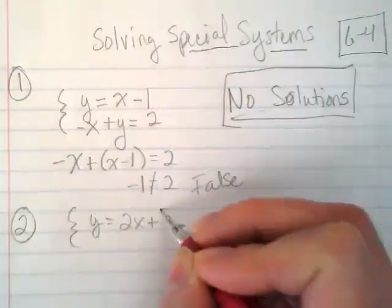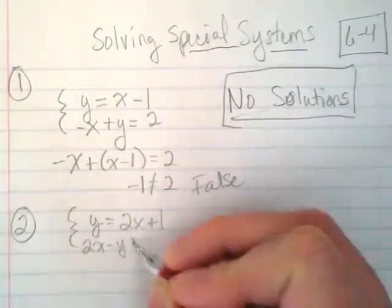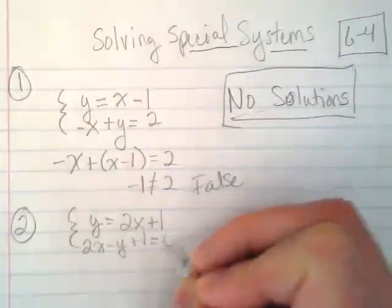Y is equal to 2x plus 1, and then 2x minus y plus 1 equals 0.